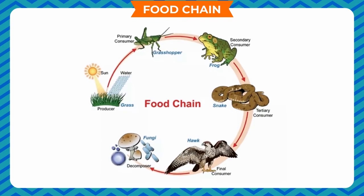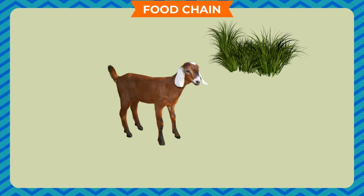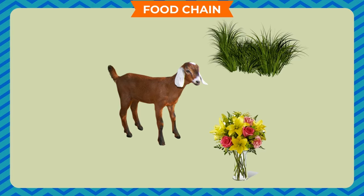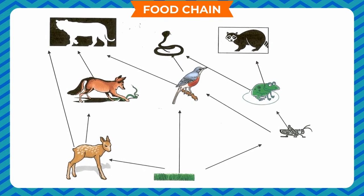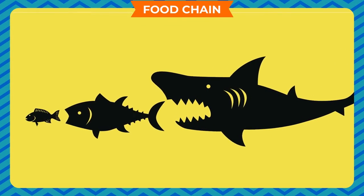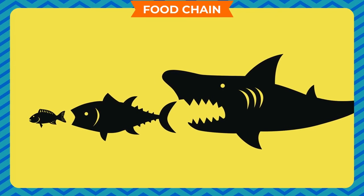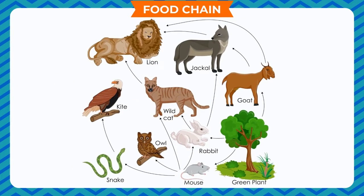Food chain: Our environment consists of different species of plants and animals. A goat eats grass, leaves, and flowers and gets eaten by a bigger animal like a lion. Similarly, a grasshopper eats green plants, a frog eats the grasshopper, a snake eats the frog, and an eagle eats the snake. This series of living organisms illustrates who eats whom — the next creature eats its earlier one.